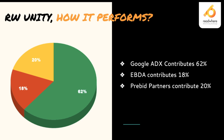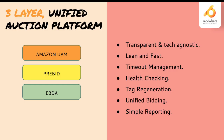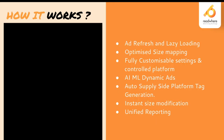In terms of revenue contribution, Google contributes around 62%, EBDA contributes around 18%, and pre-bid partners contribute around 20% of total revenue. The whole revenue is not just dependent on Google — it brings in more demand and creates better competition for higher yield. The three setups used are Amazon UAM, pre-bid, and EBDA. The platform features include transparent, tech-agnostic, lean and fast architecture with timeout management of no more than 200 milliseconds for real-time bids.